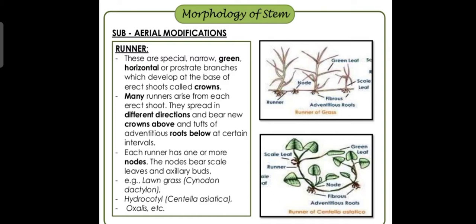Runners grow horizontally, as you can see in this structure. They develop at the base of the erect shoots, which are the straight shoots we call crowns. Many runners arise from each erect shoot. They spread in different directions and bear new crowns above and tufts of adventitious roots below at certain intervals.